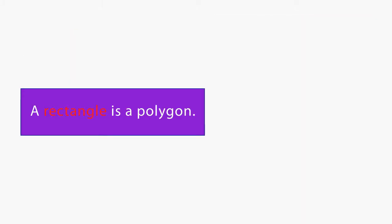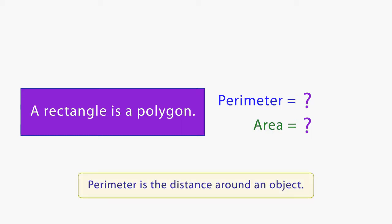A rectangle is a polygon. You can find the perimeter and area of a rectangle by using a formula. For the perimeter, you double the length, double the width and add them together. You find area by multiplying the length and the width together. But what if you forget the formulas? How can you find the perimeter and area? If you remember that perimeter is the distance around an object, we do not need a formula.